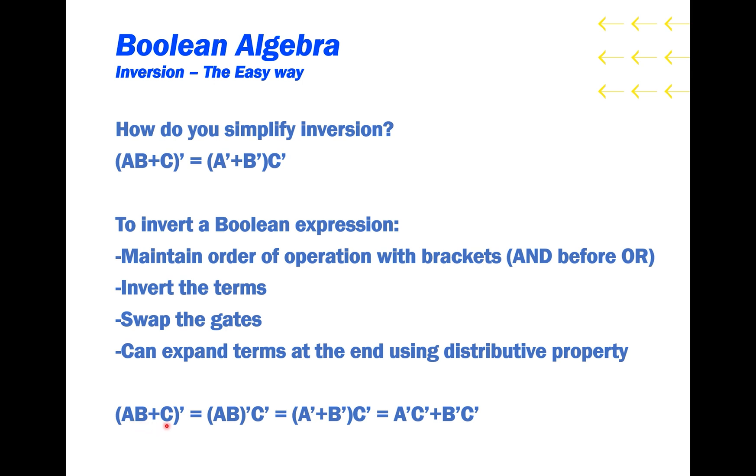So, A and B OR C inverse can simplify to A prime and B inverse and C inverse. Notice that the inverse here is distributed, and that the OR gate is replaced with an AND, and the C term is inverted. Then the inverse of A and B is A prime or B prime. Again, the variables are inverted, and the gate is swapped. And then you can distribute the C prime into the OR, like so.